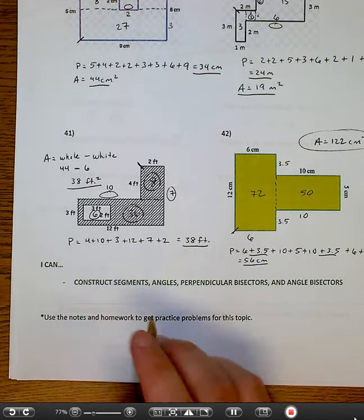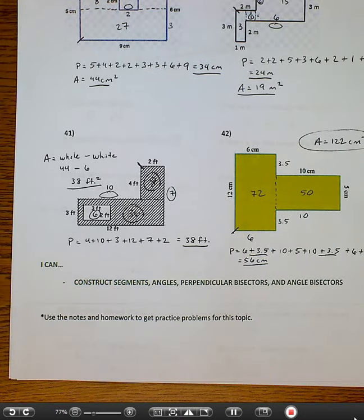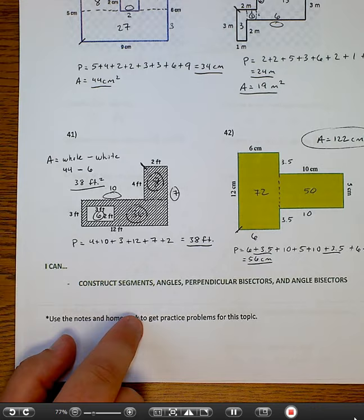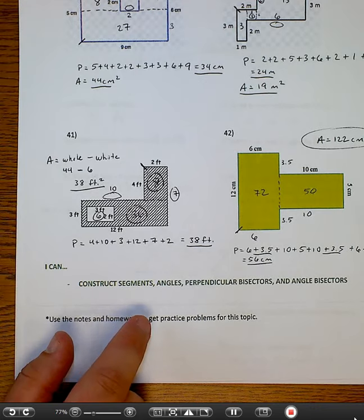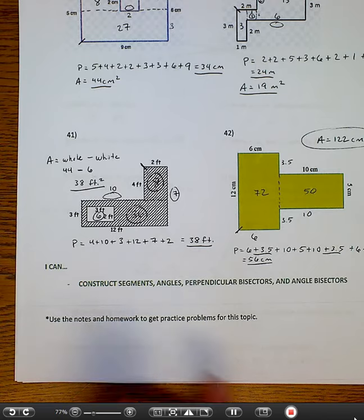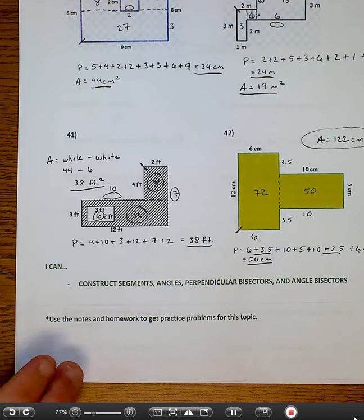Okay, so that's perimeter and area. That's what you're going to have to do on your test. Okay, the last one here. You can watch the video on constructions of segments, angles, perpendicular bisectors and angle bisectors. It's no different. What I do on the notes, the original notes, is no different than what I would do here. So if you want that, re-watch that video.